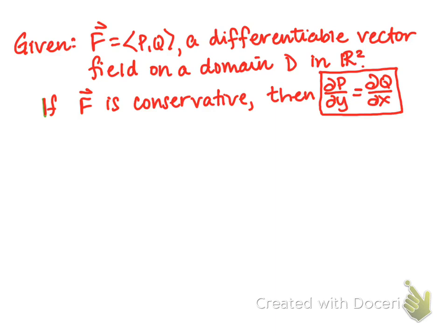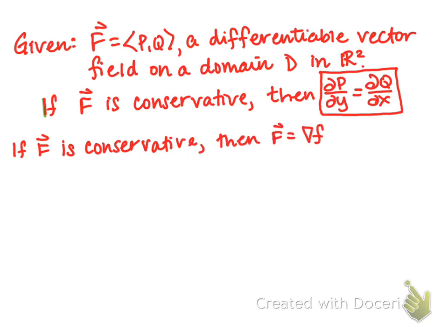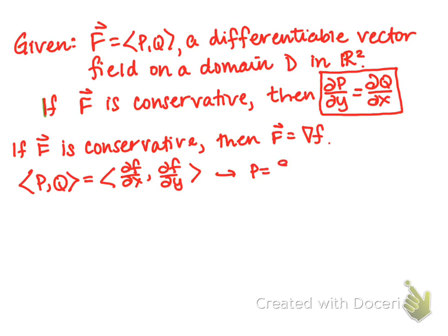Why is this fact true? Well, if F is conservative, then the vector field equals the gradient of some scalar function s. That means P equals partial s partial x and Q equals partial s partial y.